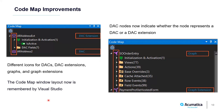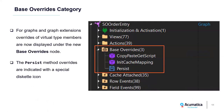Codemap tool window layout is now remembered by Visual Studio. Its behavior is now closer to the Solution Explorer window and you don't need to constantly reopen it. For graphs and graph extensions, Codemap now displays nodes representing overrides of virtual type members from base types, grouped under a new base overrides node. Persist method overrides are indicated with a special diskette icon.